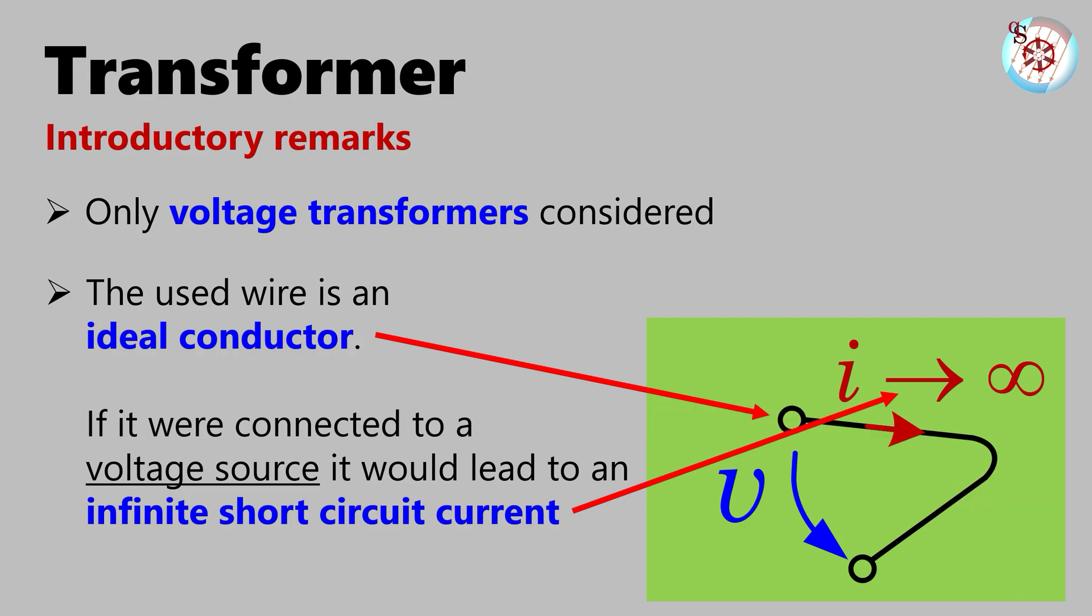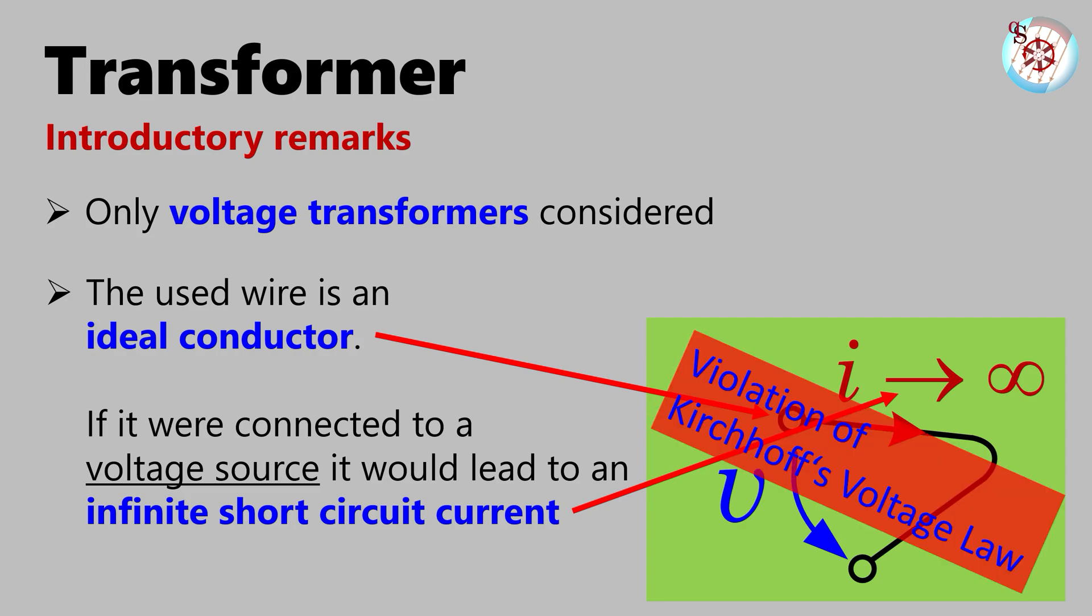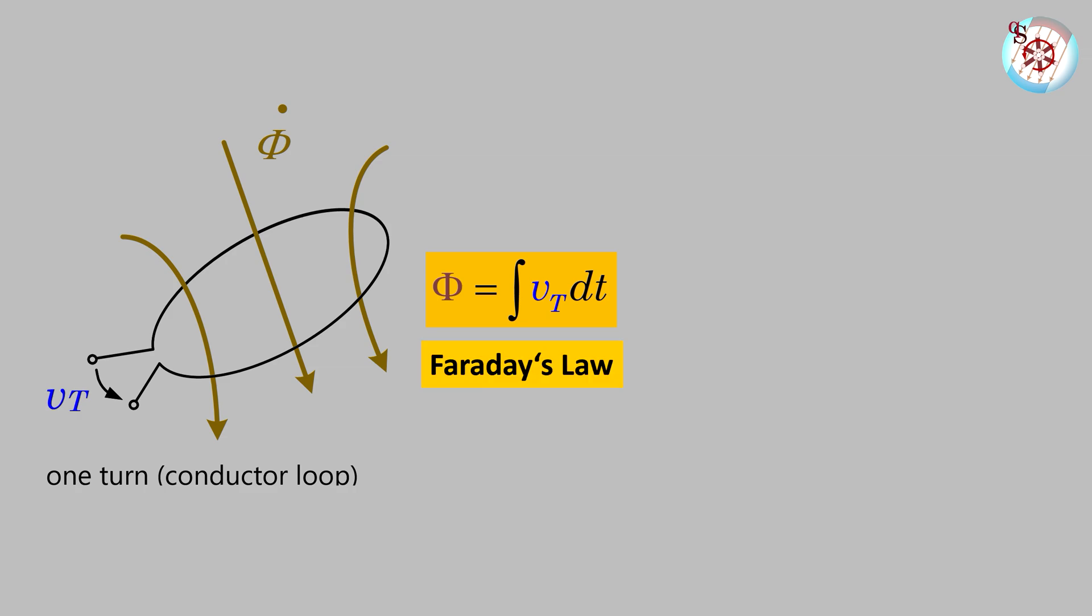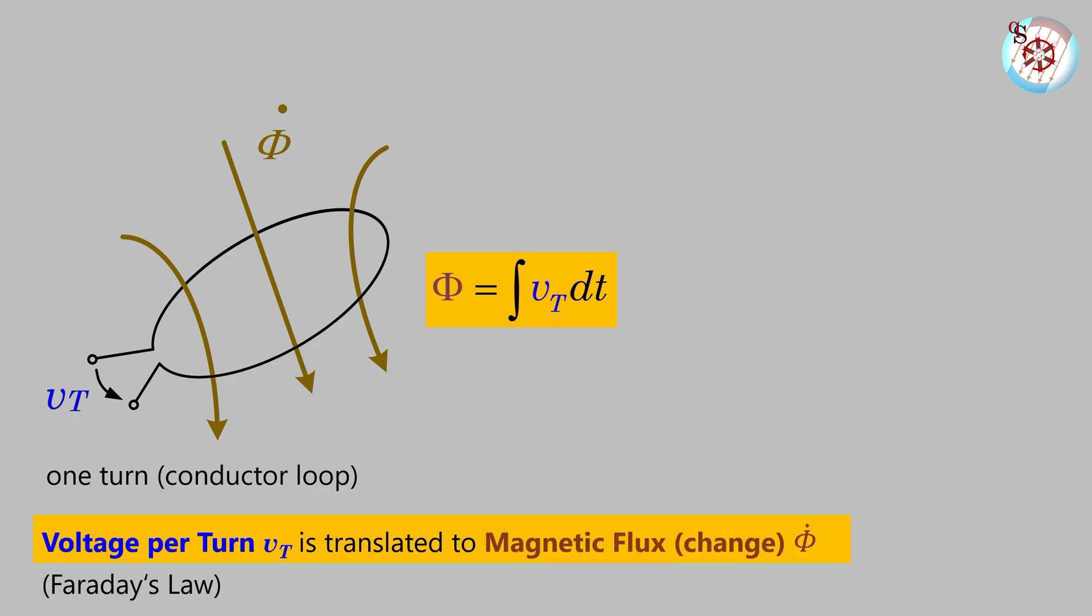This situation is different when you do not use a simple wire, but if that wire is shaped as a conductor loop. Why is this situation different? Because there is a second way how a voltage can have an effect. Apart from causing current over an ohmic resistor, it can create flux over a closed loop according to Faraday's law. In other words, voltage is translated to magnetic flux—flux change to be precise.